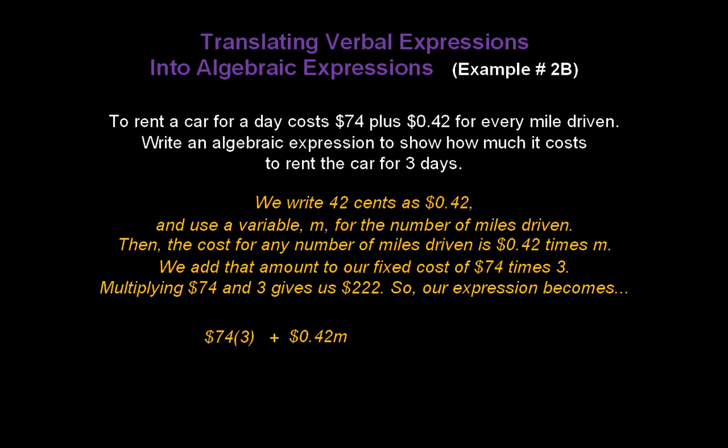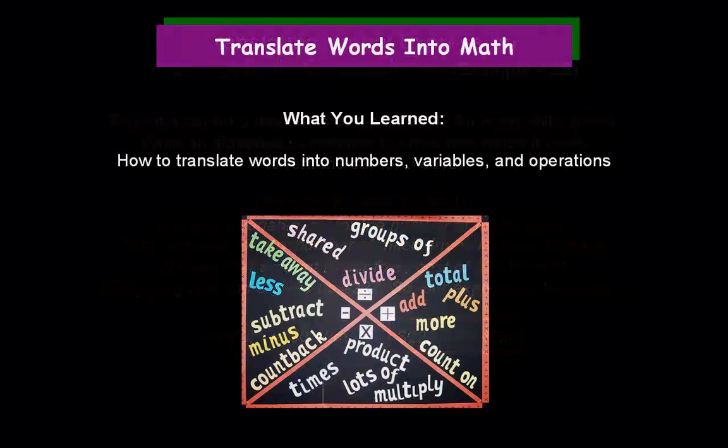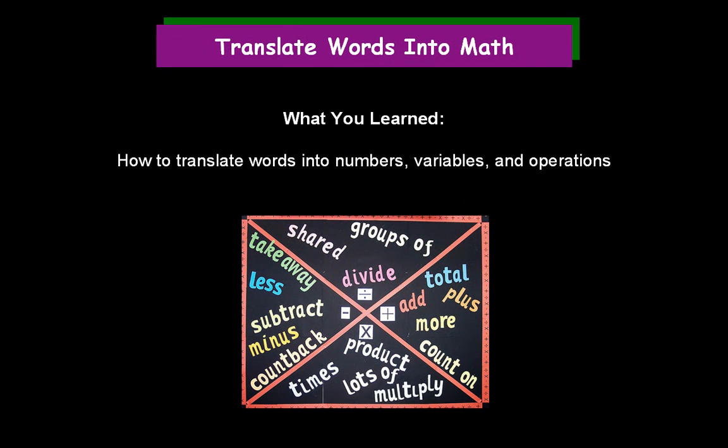Multiplying 74 and 3 gives us $222. So we can simplify this expression and write it as $222 plus 0.42m. That's our algebraic expression for that word problem. Congratulations! You've learned how to translate words into numbers, variables, and operations.